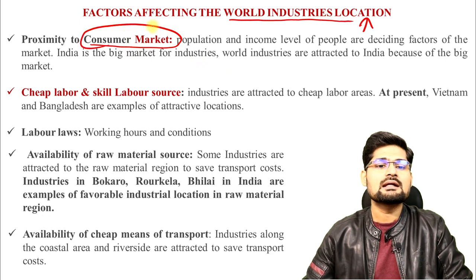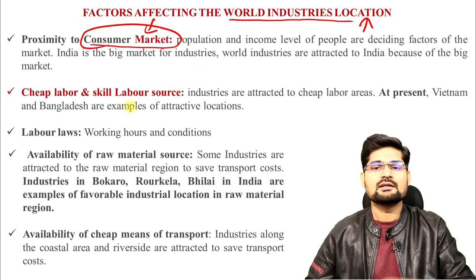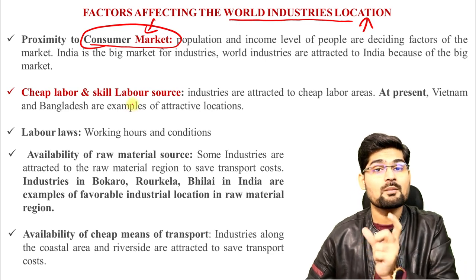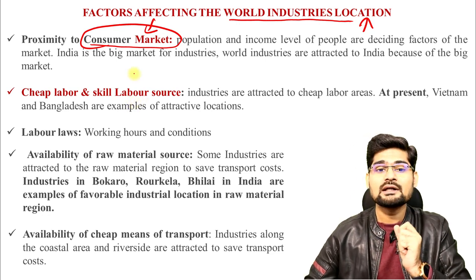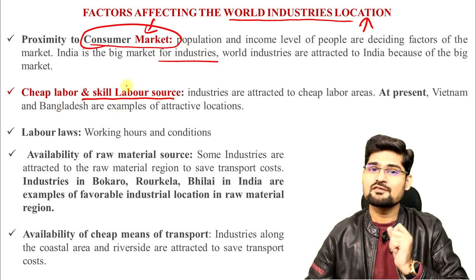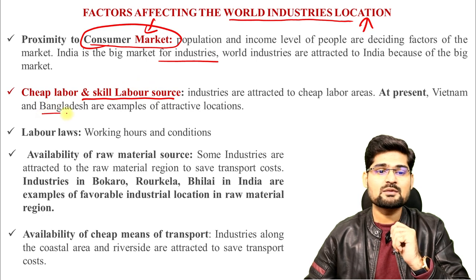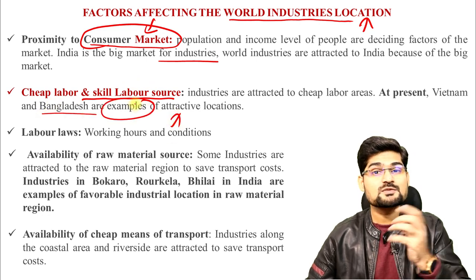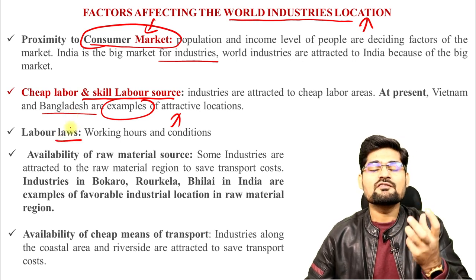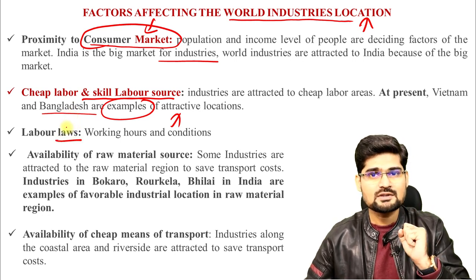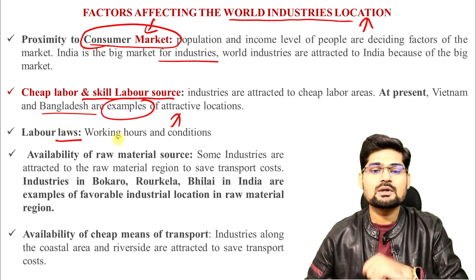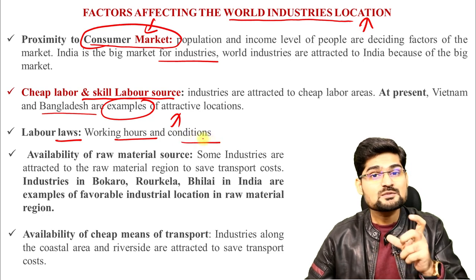Proximity to the consumer market is the first factor — who is going to consume the products coming out of the industry matters a great deal. Market has very important value when setting up industries. Then cheap and skilled labor sources are very important. Countries like Vietnam and Bangladesh are doing well as attractive locations because of cheap labor. Labor laws — what facility the government gives to laborers and what conditions govern their work — are also significant.